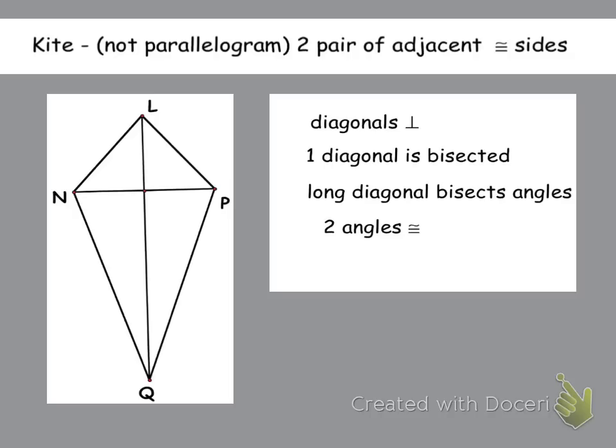So that's basically your isosceles trapezoid. And last but not least, we're going to talk about kites, and kites we don't use a whole lot, but for this section you need to know them. A kite, again, is not a parallelogram, none of these are parallelograms. It has two pair of adjacent congruent sides. That means that this side, NL, is congruent to LP, and this side, NQ, is congruent to PQ. So these sides are congruent, and that's kind of your definition of a kite.